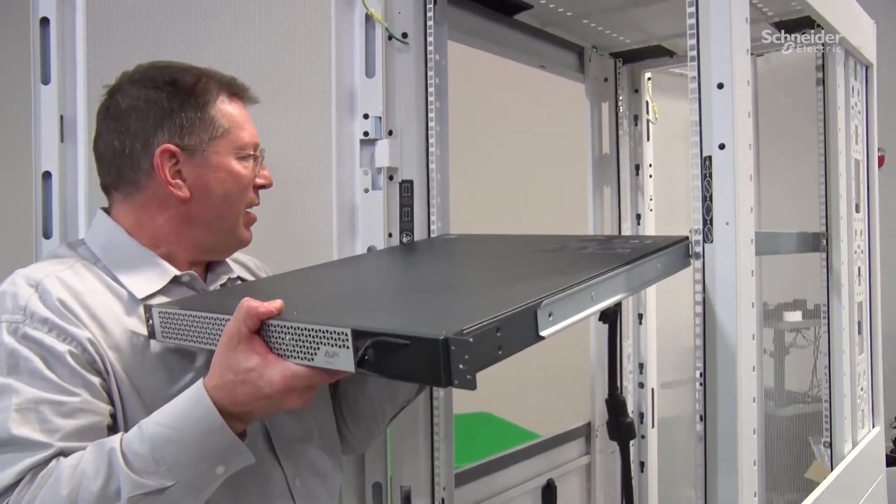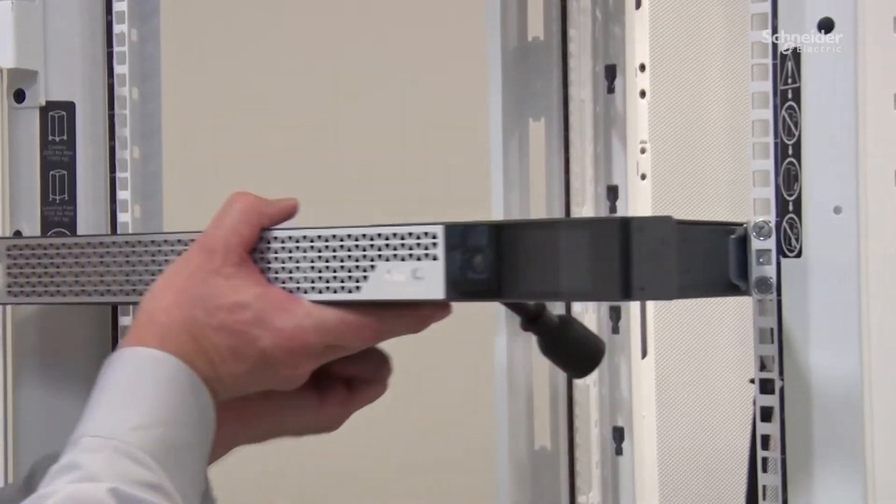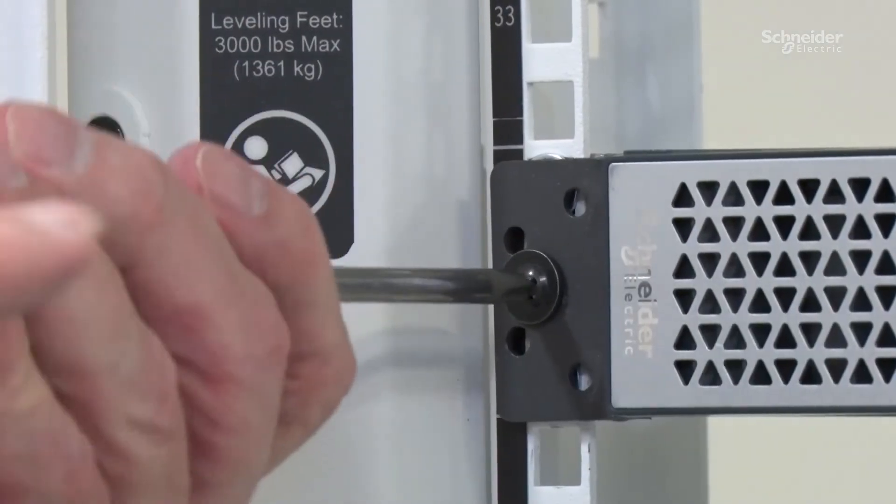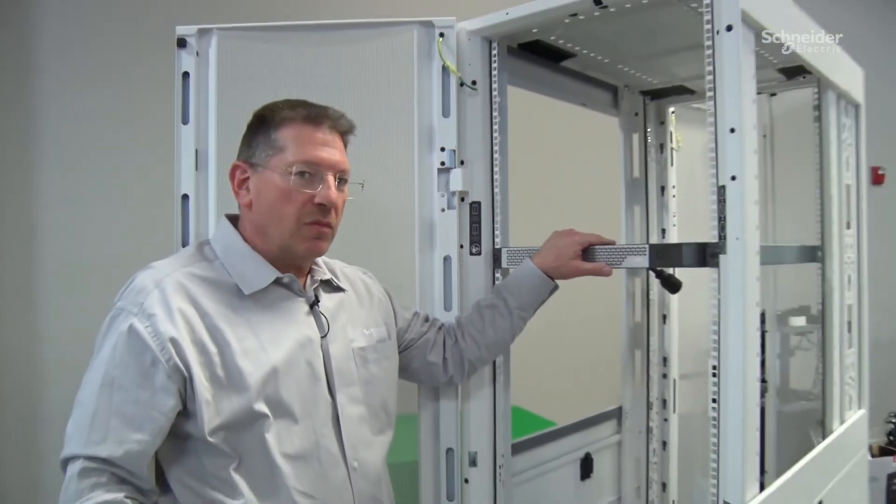Alright. Align the rails, slide the unit in and secure it in front. Plug it in. You're ready to go.